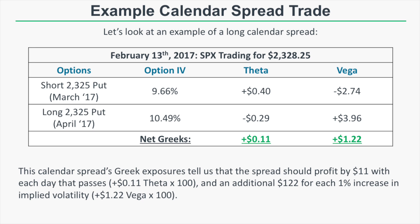Looking at the theta values, the short put has a theta value of positive 40 cents while the long option has a theta of negative 29 cents, giving us a net theta exposure of positive 11 cents. That means with each day that passes, if SPX does not change value and implied volatility does not change, we should profit by 11 cents per day, or $11 of profit per day.